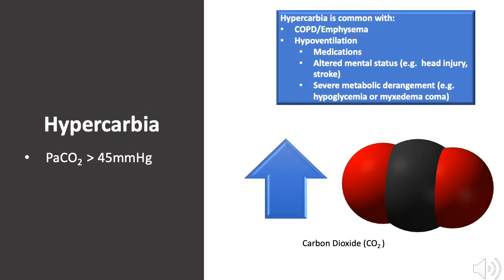Hypercarbia is defined as a partial pressure of arterial carbon dioxide greater than 45 mmHg as measured on arterial blood gas analysis. Hypercarbia is common in COPD, emphysema, and hypoventilation.